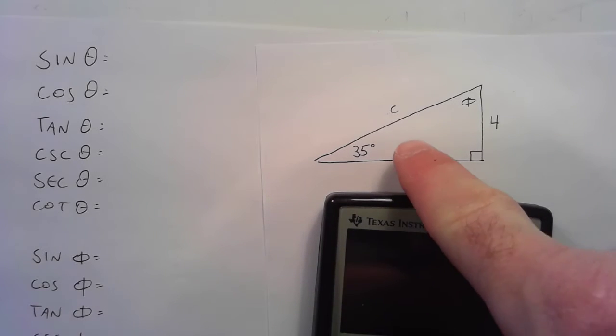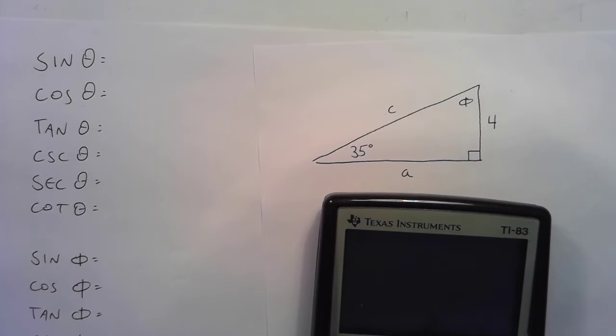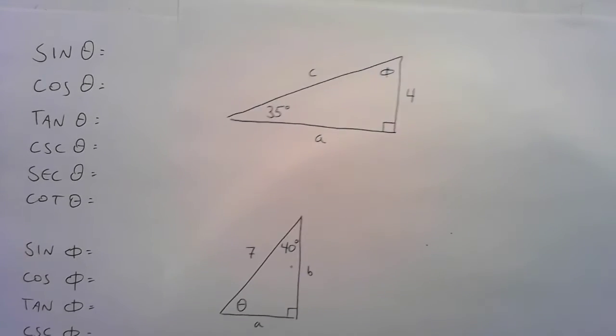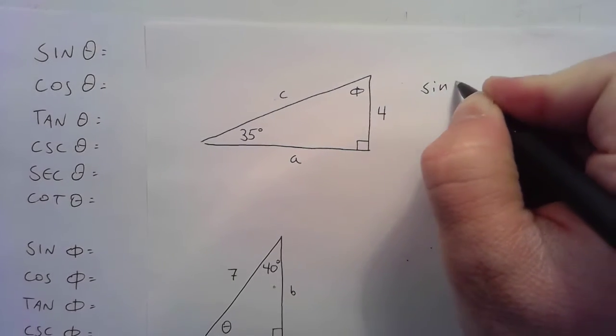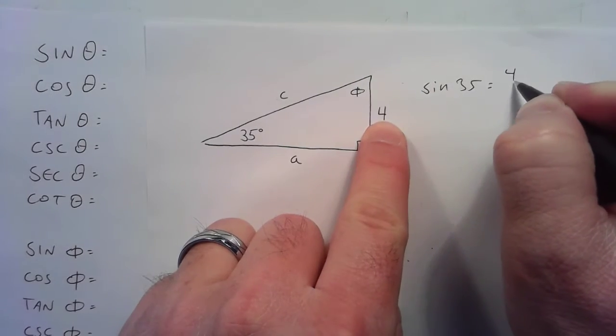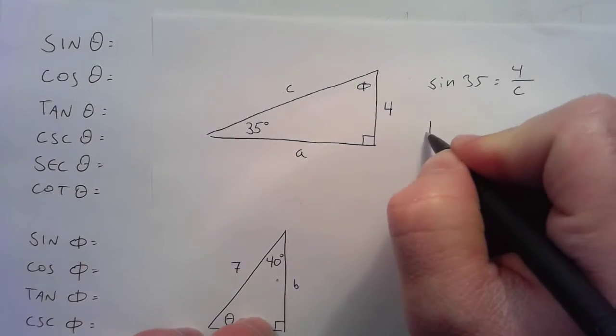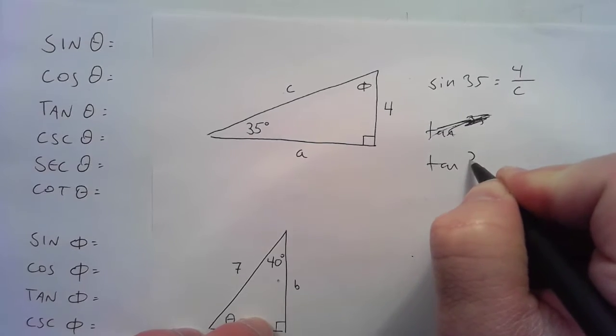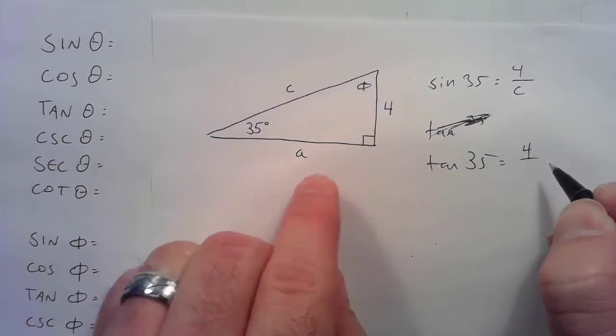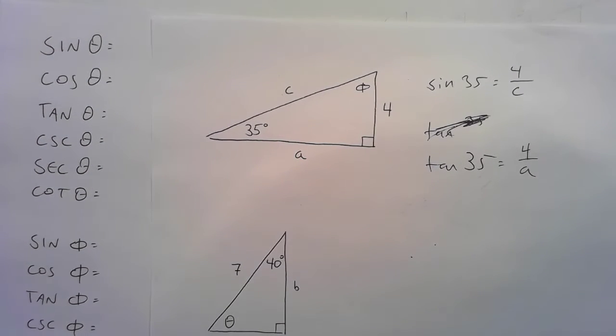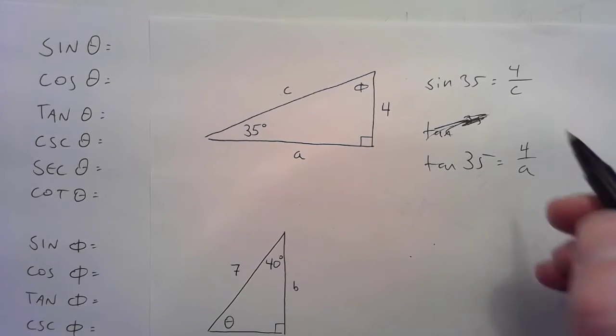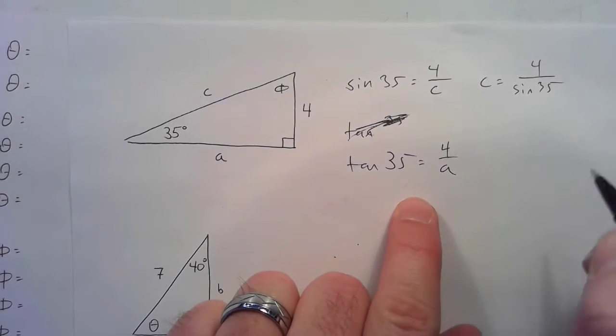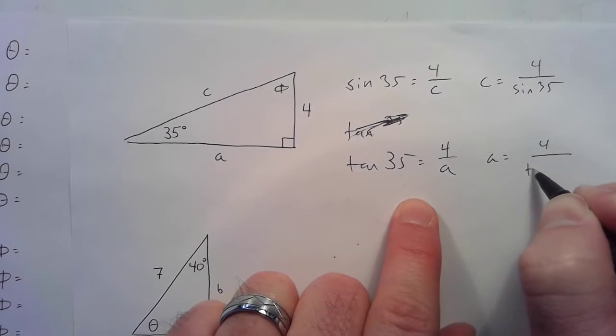All right, so the information that is in this triangle is an angle and its opposite, which means that the tangent and sine functions are going to be super useful. So let me just write out a couple equations which I'm probably about to use. One is that the sine of 35° is going to be equal to opposite over hypotenuse, and that the tangent of 35° is going to be equal to opposite over adjacent.